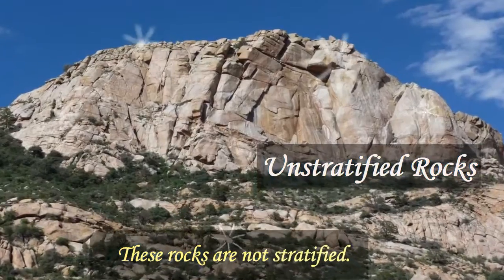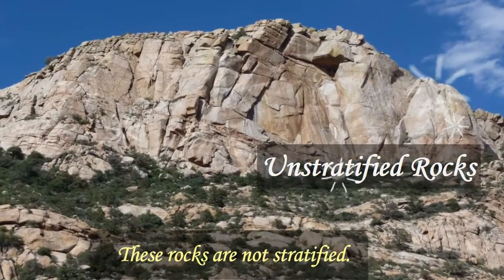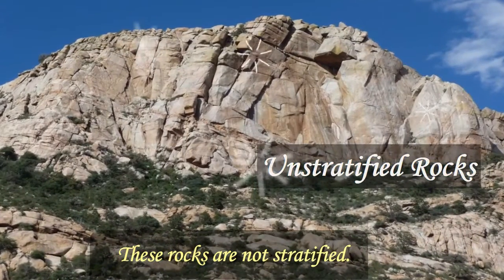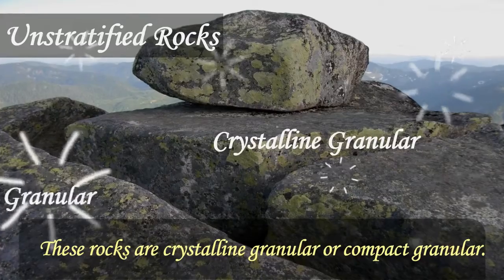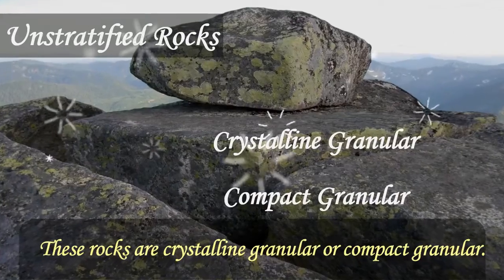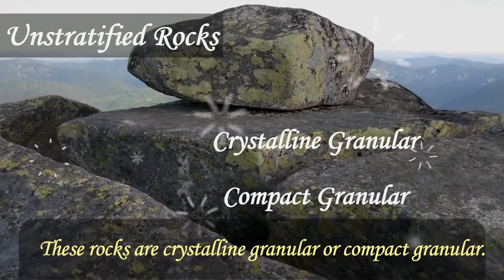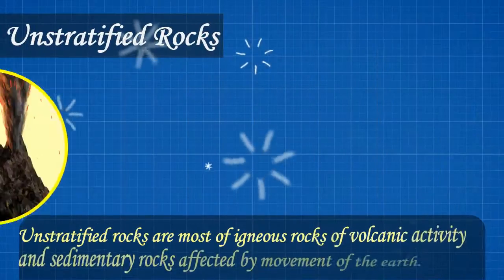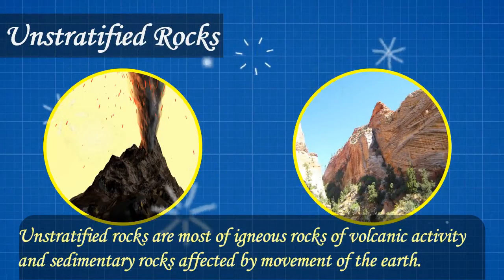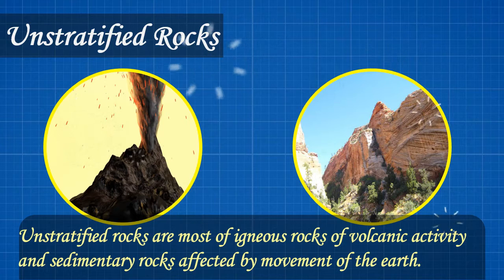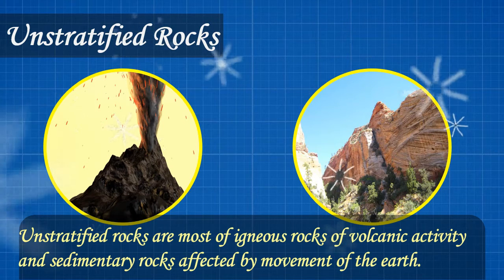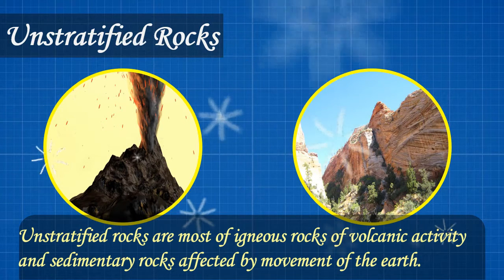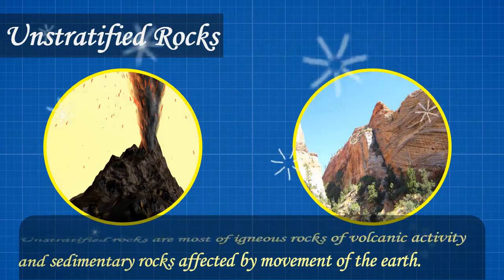Unstratified rocks are those that are not stratified. These rocks are crystalline granular or compact granular. Unstratified rocks are mostly igneous rocks of volcanic activity and sedimentary rocks affected by movement of the earth.